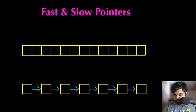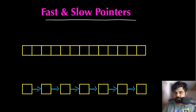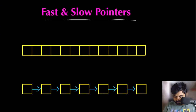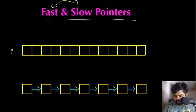Hello friends, in this video we are going to learn about fast and slow pointers. This is a really popular coding pattern technique used in a specific type of problem. It is also known as the rabbit and tortoise problem, or the hare and tortoise problem. In this method, we basically use fast and slow pointers to move across any array or linked list.